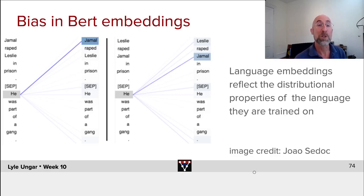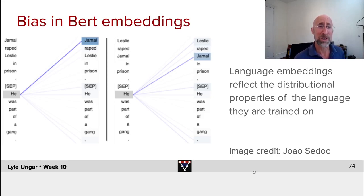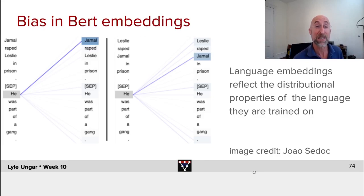That reflects the language the model was trained on, but perhaps not a reflection you want to perpetuate if you're writing software to decide who to hire as a programmer at Google, where you're using a pre-trained model that brings in all of these biases — biases reflecting the language it was trained on.